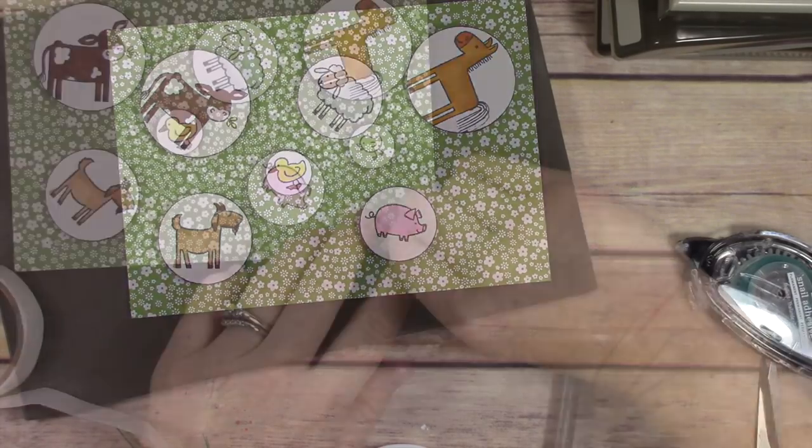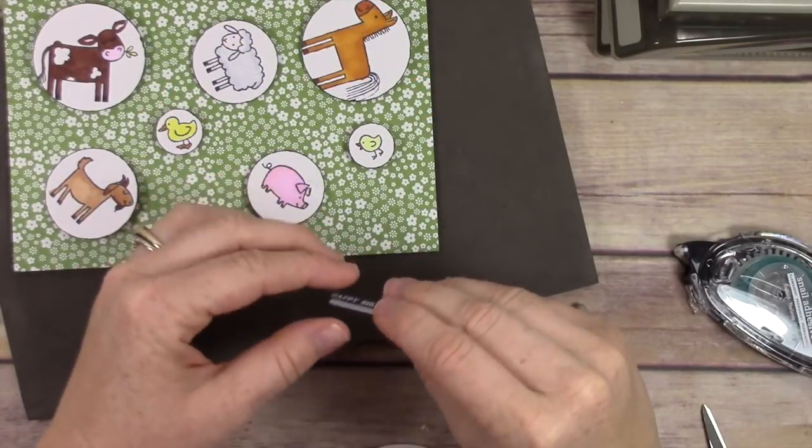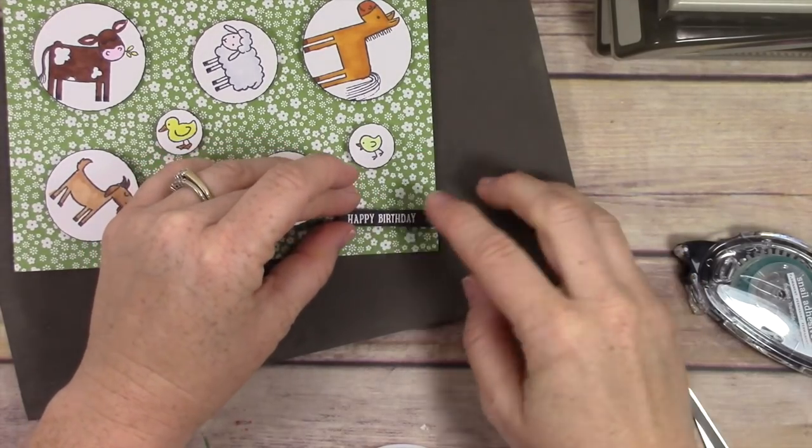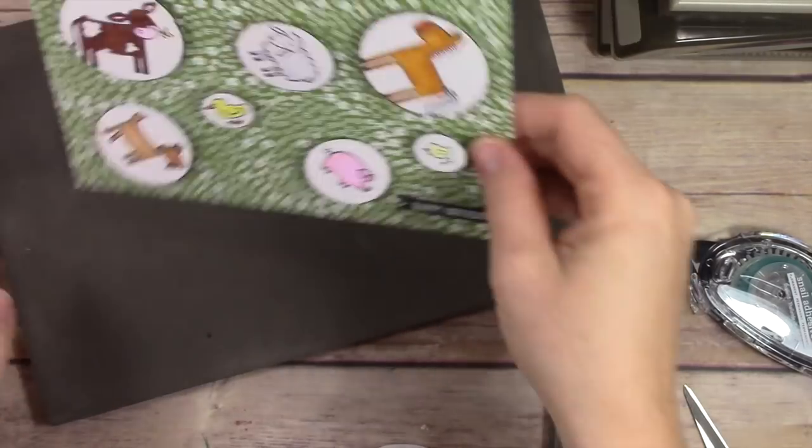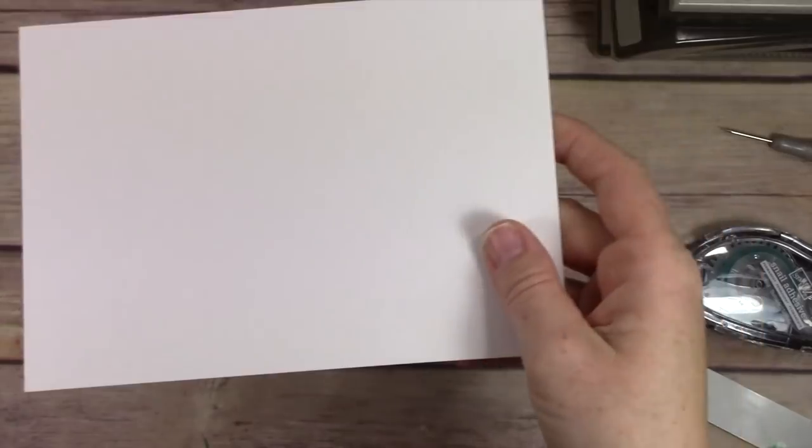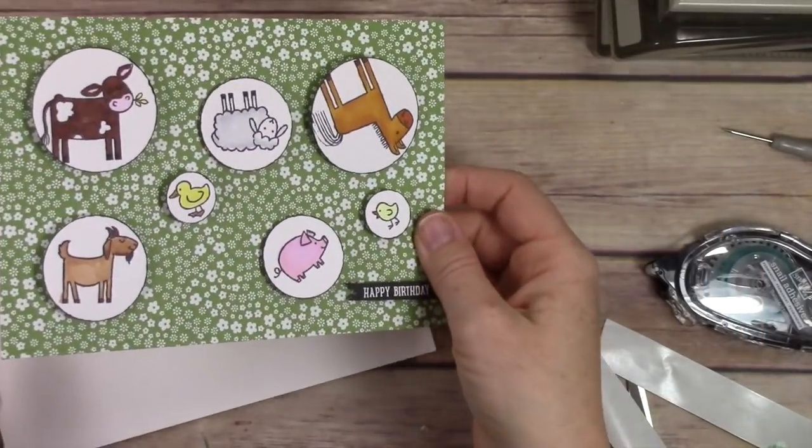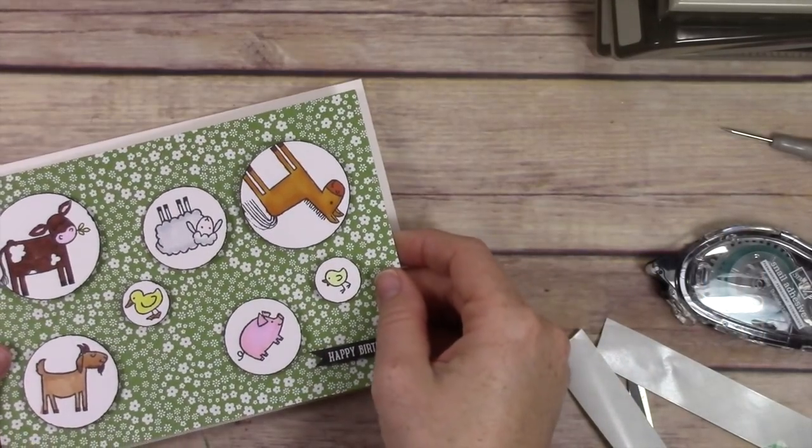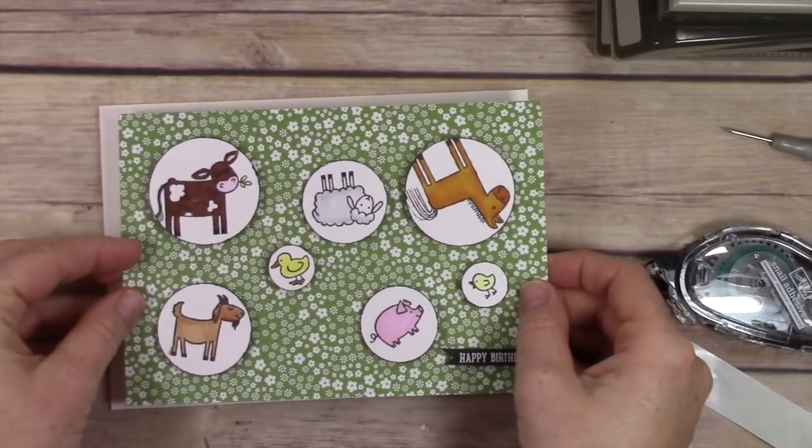I'm pulling away the release paper from this sentiment because I put it on a little dimensional strip. You can see there's all my brads. I use dimensional tape to add it to the front of my card, and I'm adhering it down to my card base.